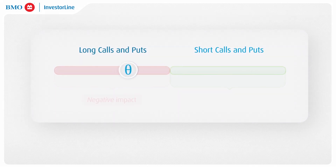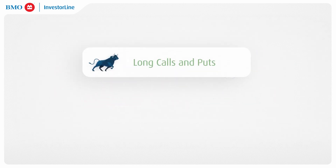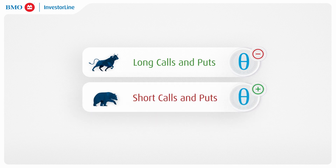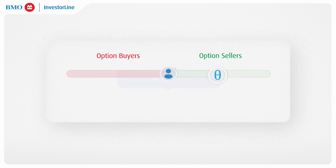Theta will have a negative impact on long calls and puts, as the goal for these strategies is to profit from an increase in the value of the option. However, Theta has a positive impact on short calls and puts, because these strategies profit when the option's value erodes. This is why long calls and puts have negative Theta, while short calls and puts have positive Theta. As Theta works in favor for the option sellers, it allows investors to profit in neutral market conditions by utilizing strategies that have a net positive Theta.